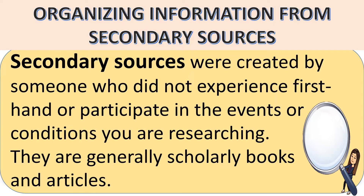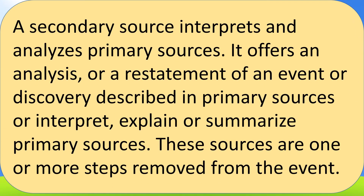Organizing information from secondary sources. What do you mean by secondary sources? Secondary sources were created by someone who did not experience firsthand or participate in the events or conditions you are researching. They are generally scholarly books and articles. Secondary sources are the books that you are reading, because books, encyclopedias, or any other articles are based on primary sources. A secondary source interprets and analyzes primary sources. It offers an analysis or a restatement of an event or discovery described in primary sources, or interprets, explains, or summarizes primary sources. These sources are one or more steps removed from the event.